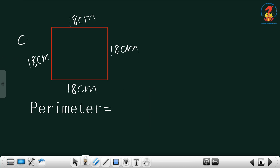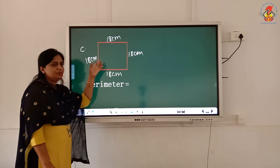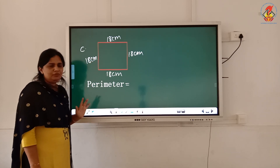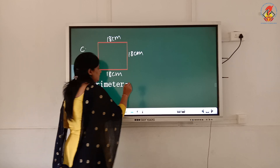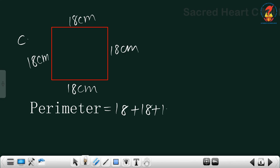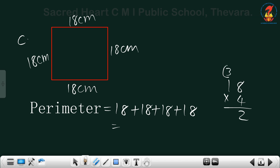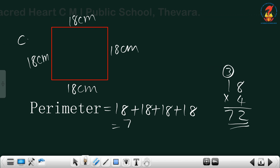The next one has side 18. This is also a square — 4 sides are equal. 18 plus 18 plus 18 plus 18. Instead of that, multiply by 4: 4 times 18 equals 72 centimeters.